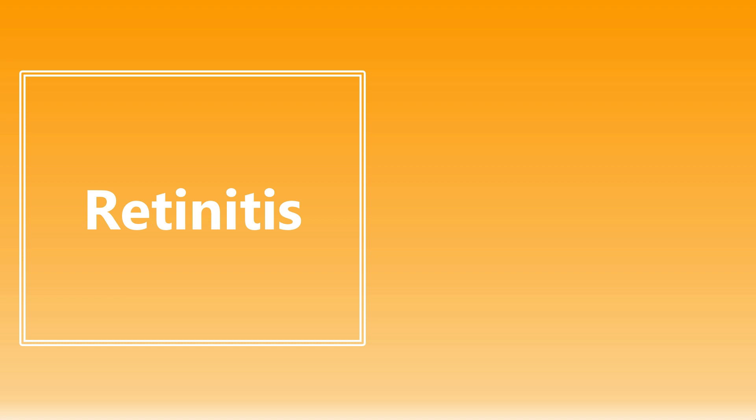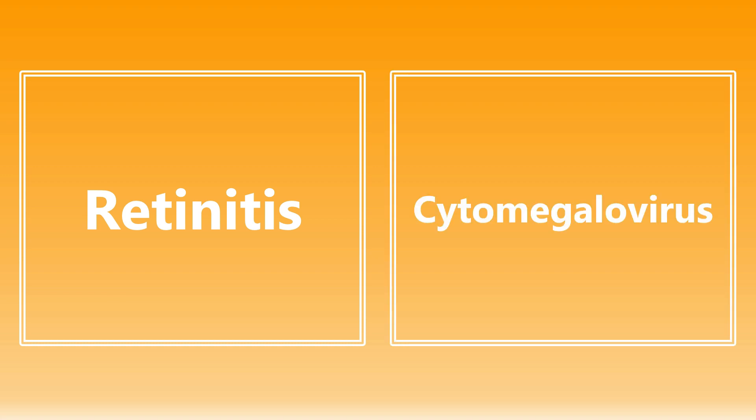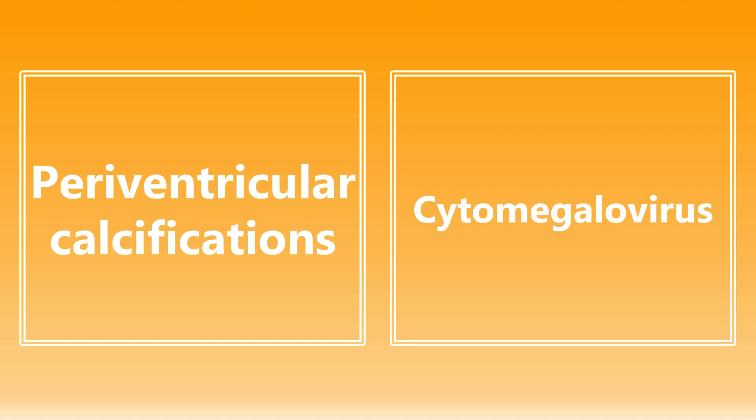Moving on: retinitis. If they are talking about retinitis on the exam, especially if it's someone who's immunocompromised — a transplant patient, an HIV patient — the big association is going to be cytomegalovirus, CMV retinitis. Periventricular calcifications is also going to be cytomegalovirus. So periventricular calcifications — we want to be thinking of cytomegalovirus.